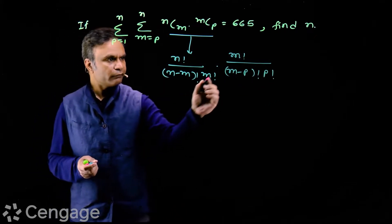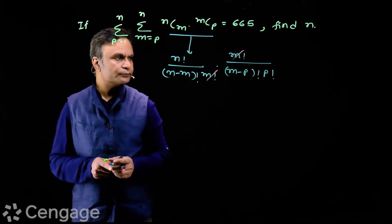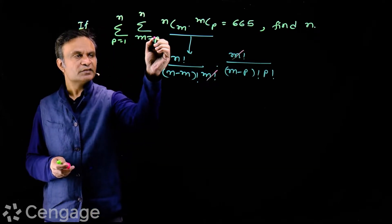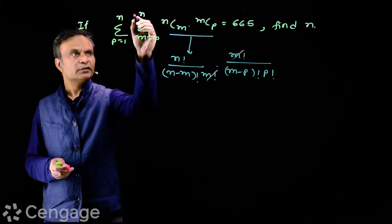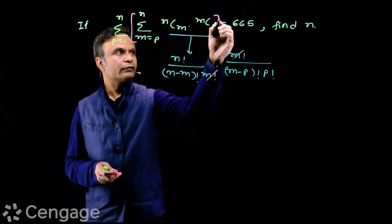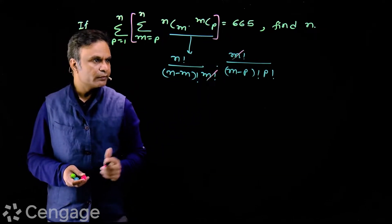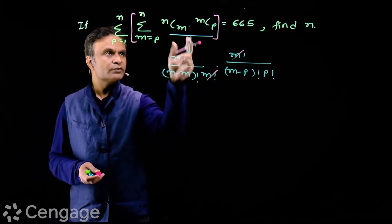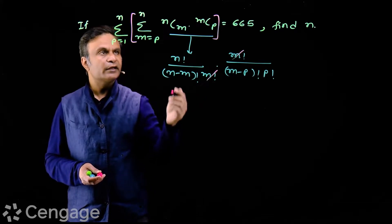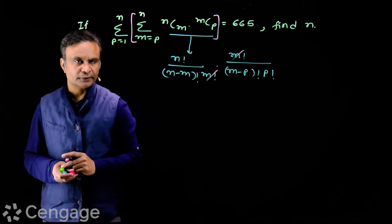Here m factorial gets cancelled out. Now, in the first sigma we have variable m. So we keep factorials having m here, and other factorials we can take out from the sign of sigma.